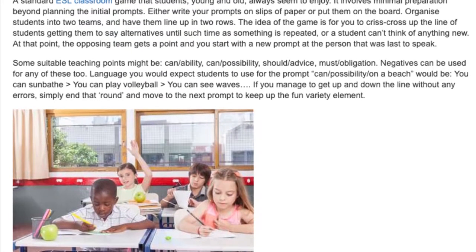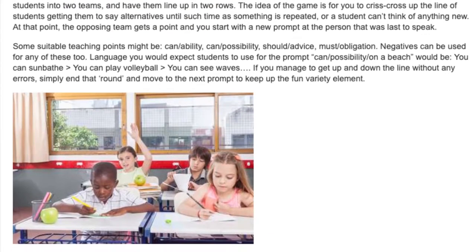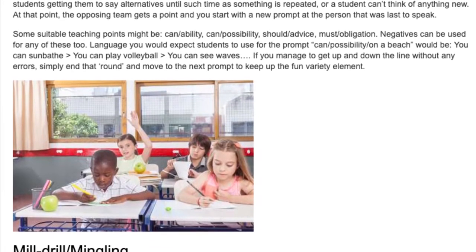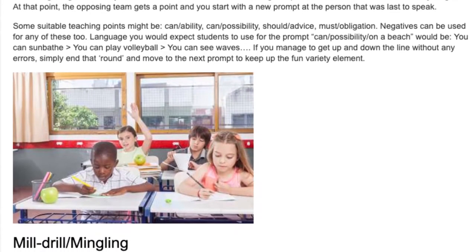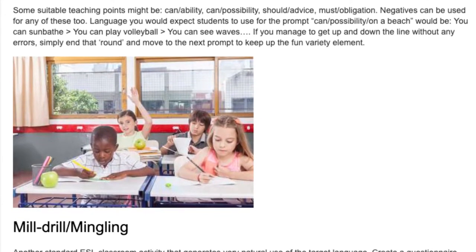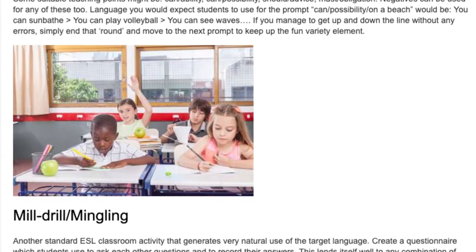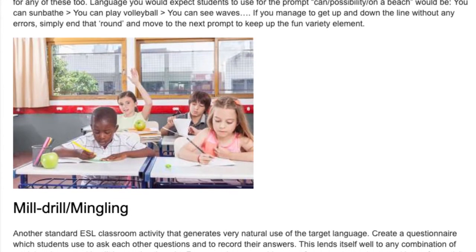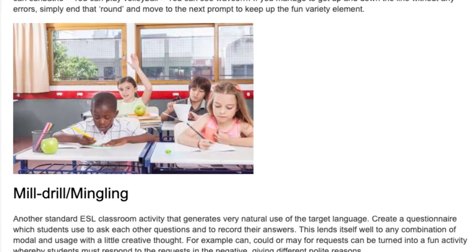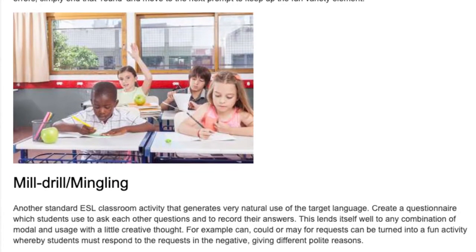Suitable teaching points include: can (ability), can (possibility), should (advice), must (obligation) — negatives can be used for any of these. Language you would expect for the prompt 'can — possibility — on a beach' would be: 'You can sunbathe,' 'You can play volleyball,' 'You can see waves.' If you get up and down the line without any errors, simply end that round and move to the next prompt.